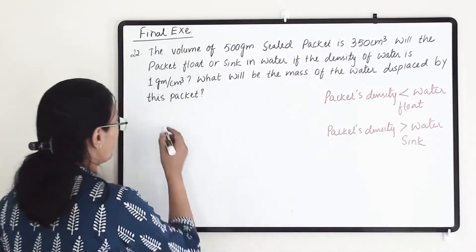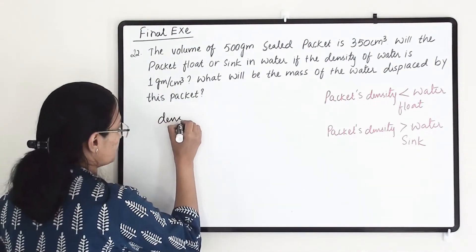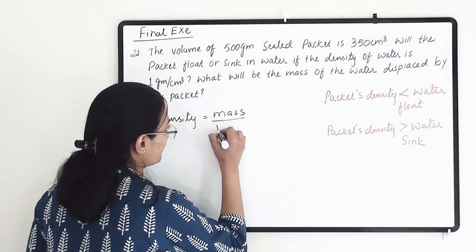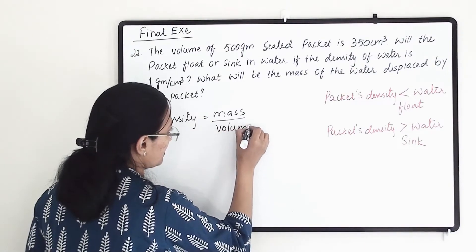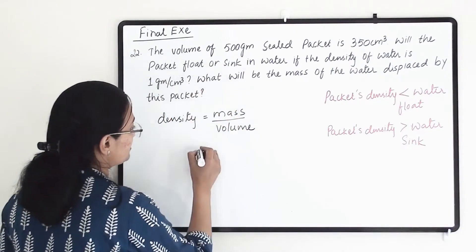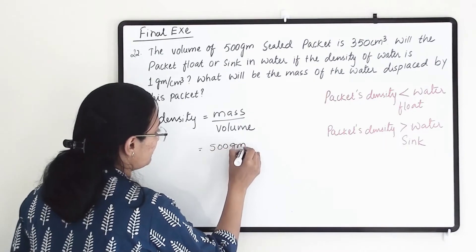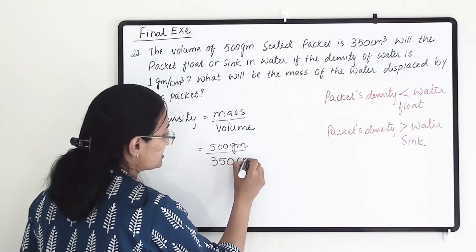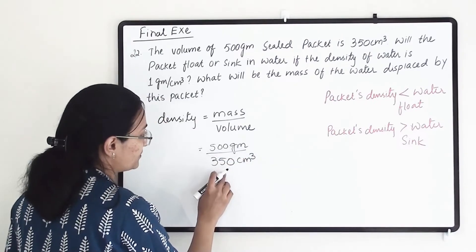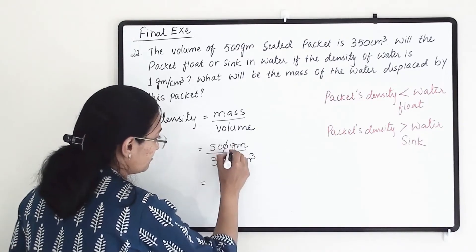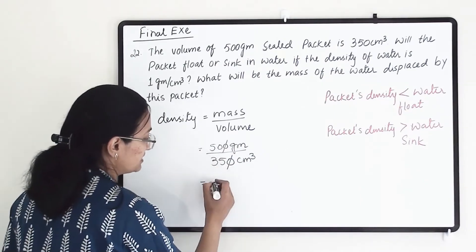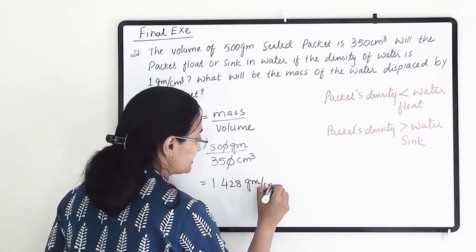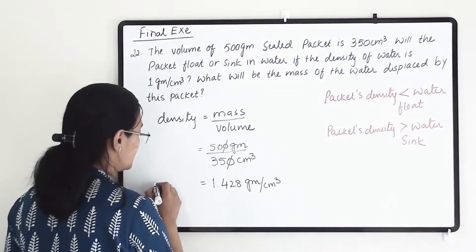First we find the packet's density using the formula: density equals mass divided by volume. The mass is 500 grams and the volume is 350 centimeter cube. So we get 500 divided by 350, which is 50 divided by 35, giving us approximately 1.428 grams per centimeter cube as the density of the packet.